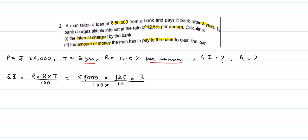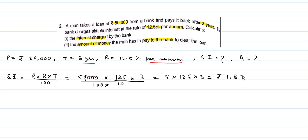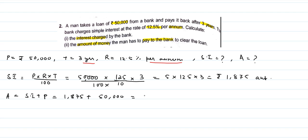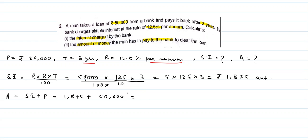Converting 12.5 to 125 by 10 to remove the decimal: SI equals 50,000 into 125/10 into 3 divided by 100. Cancelling four zeros, it becomes 5 into 125 into 3, giving simple interest of Rs 18,750. Now amount equals simple interest plus principal, so amount equals Rs 18,750 plus Rs 50,000, which gives Rs 51,875.